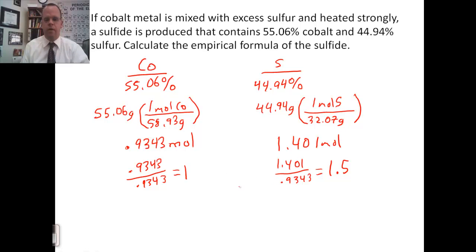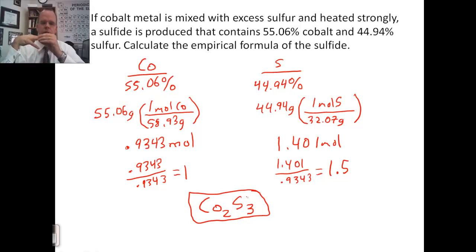Once again, I have a ratio that's not whole numbers. To make these whole numbers, I need to multiply both by 2. So, Co2S3 would be my empirical formula. So, you can do this with more than two elements, and it would just be done the same way. You would just divide each by the smallest one of however many elements you have and come up with that ratio. And you will see cases like this where you do not get whole number ratios. You need to multiply all the ratios by a number to make sure they're all whole numbers.